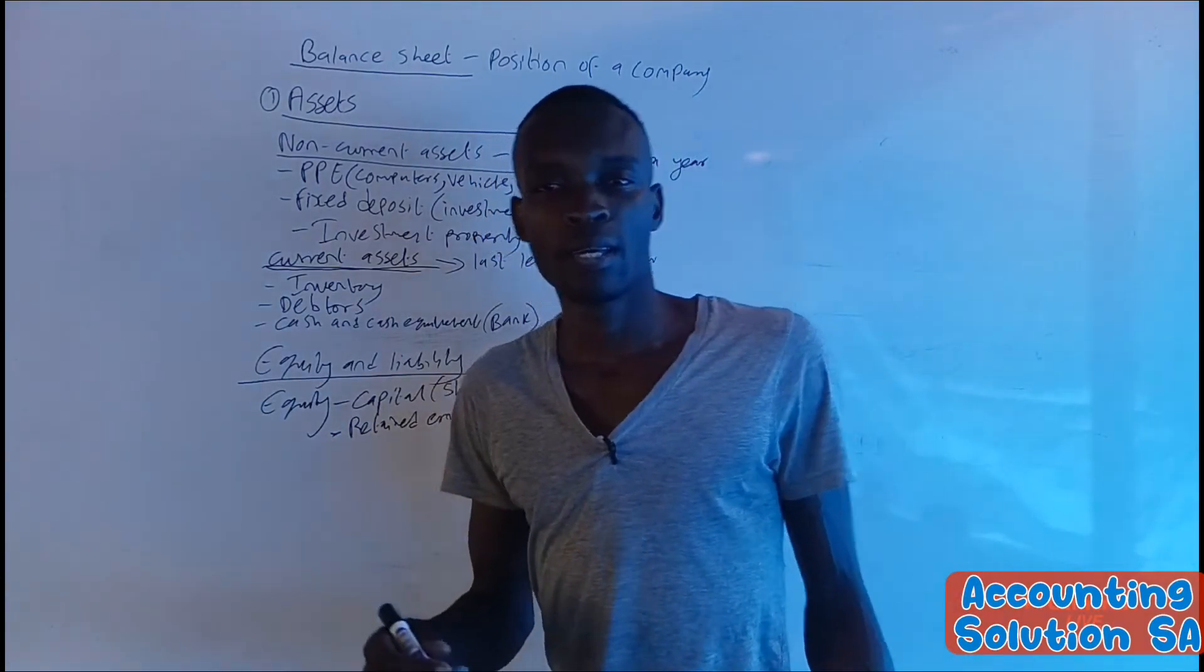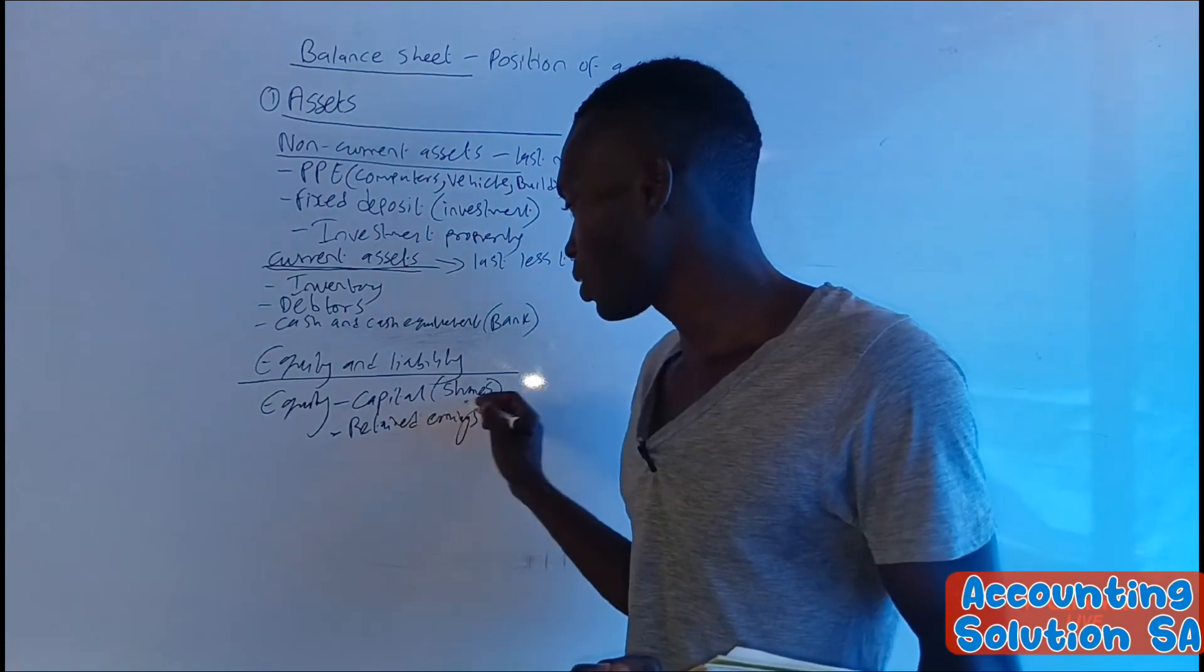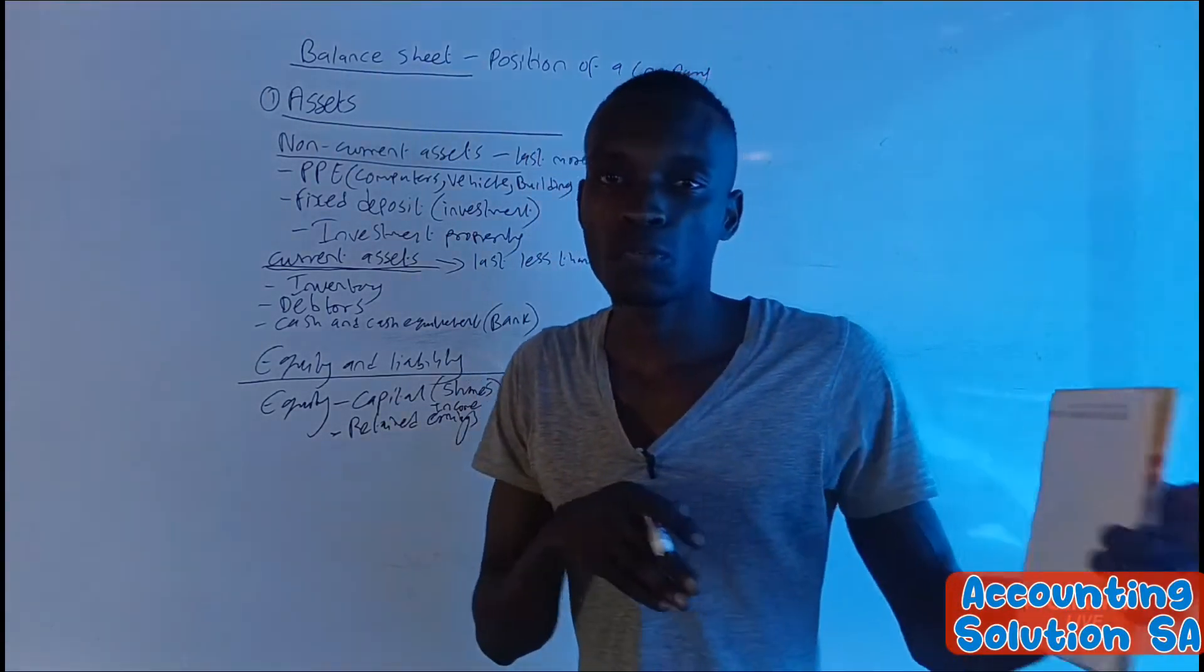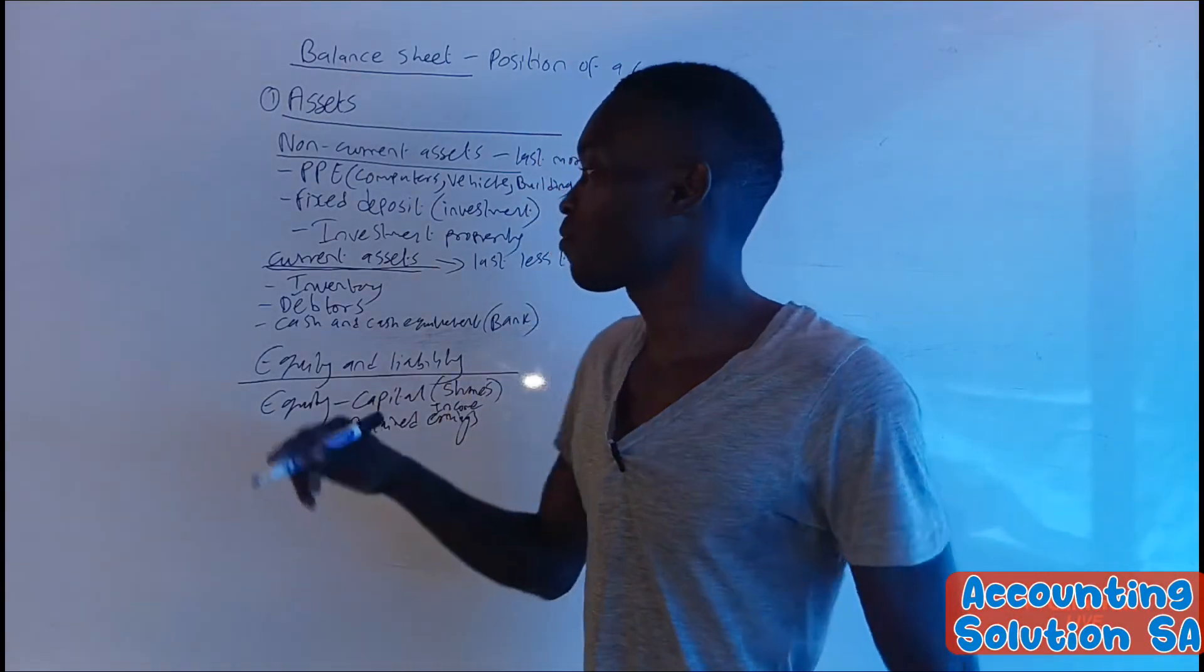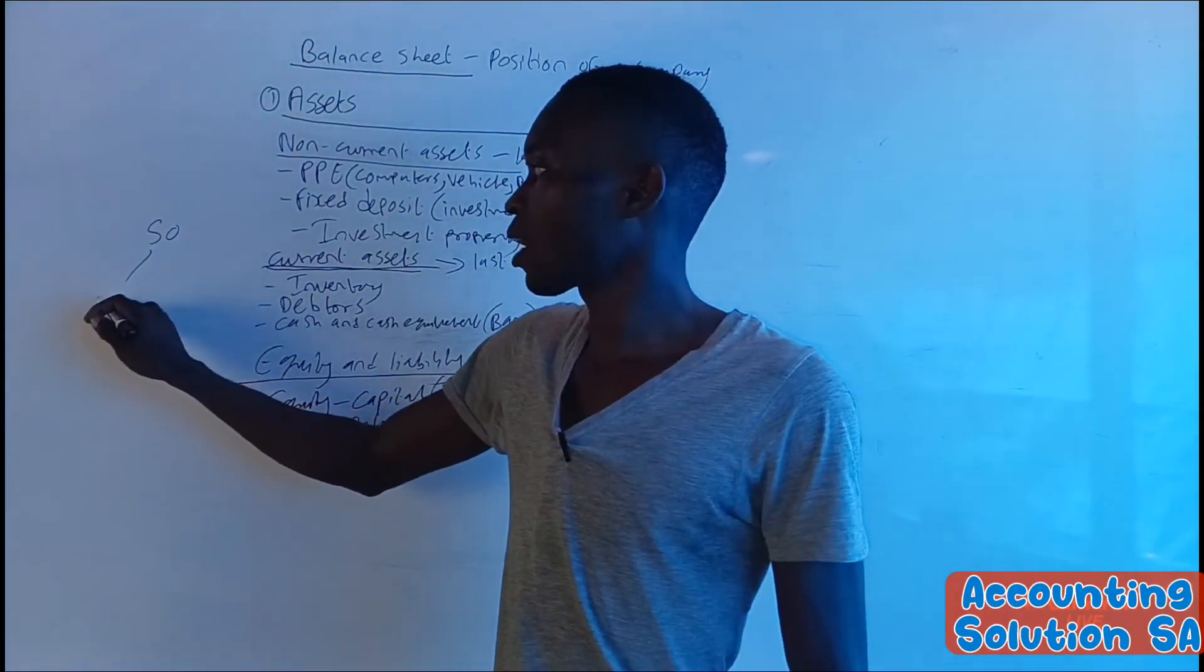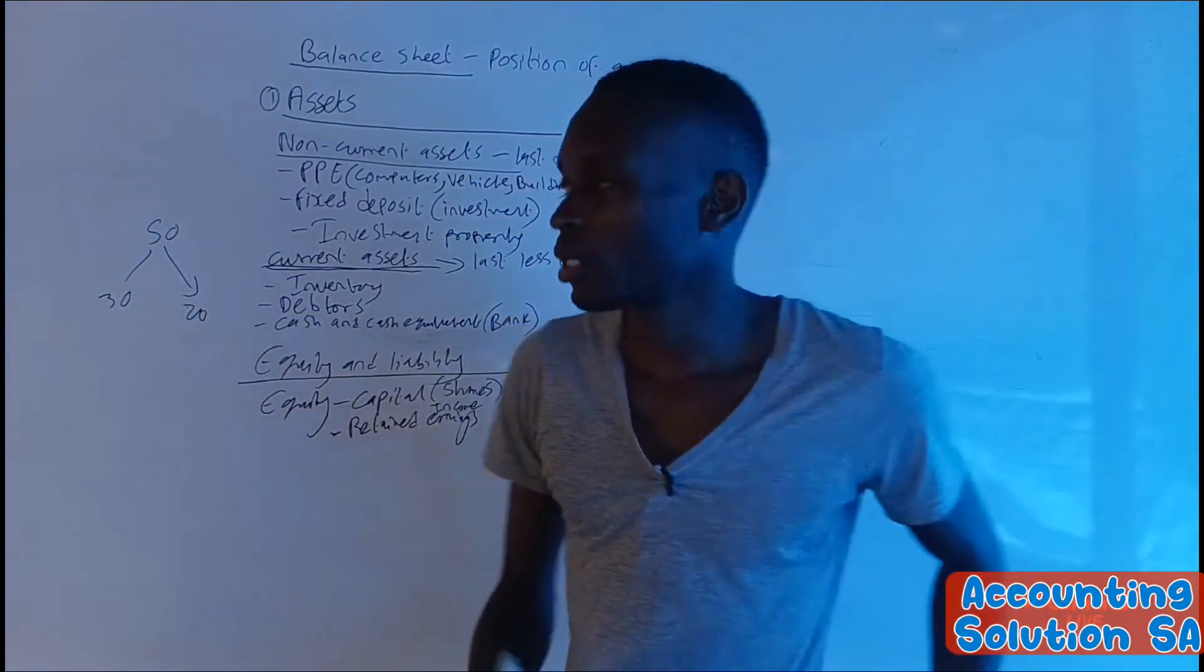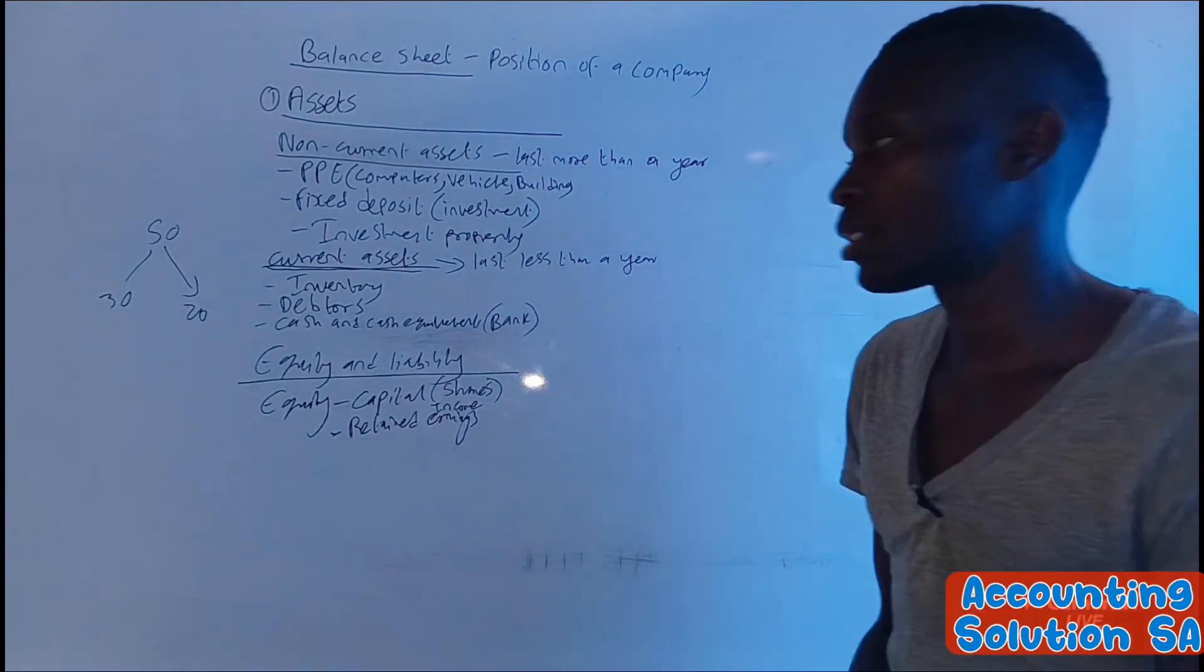Retained earnings - this is the income, or in other words, you can call it retained income. This is the income that we retain after we contributed the net profit that we got from income statement. For example, if we made a profit of 50 rand and we contributed 30 rand to shareholders, we pay shareholders 30 rand and 20 rand, we call it retained. We retain it to this account, to our equity.